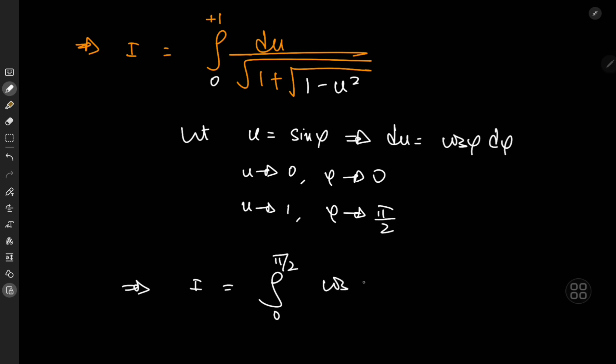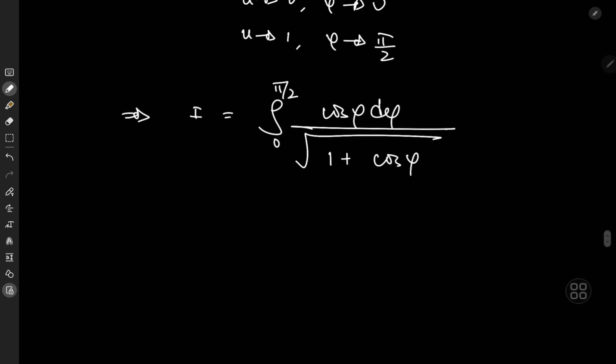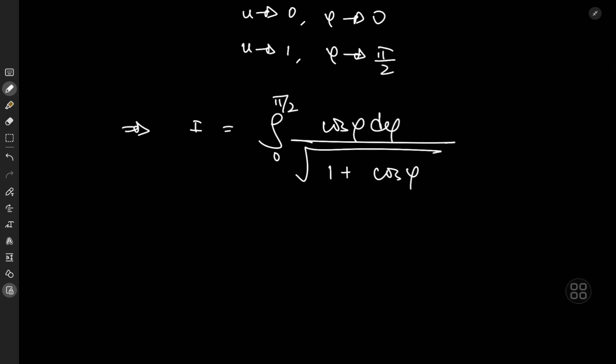We now have the integral from 0 to π/2 of cos(φ) dφ divided by the square root of 1 plus the square root of 1 − sin²(φ). Since 1 − sin²(φ) = cos²(φ), taking its square root gives cos(φ), giving us 1 + cos(φ) in the denominator. This motivates using the half-angle double angle formula: cos(φ) = 2cos²(φ/2) − 1.